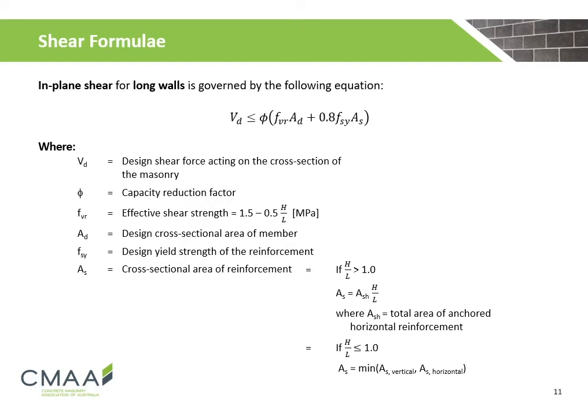In-plane shear for long walls is governed by the following equation, where Vd is the design shear force; phi is the capacity reduction factor; Fvr is the effective shear strength; Ad is the design cross-sectional area of the member; Fsy is the design yield strength of the reinforcement; and As is the cross-sectional area of the reinforcement.